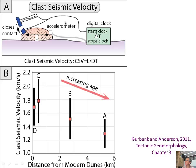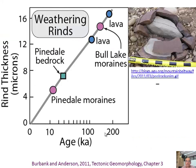You use a timer and accelerometer — hit the rock, that triggers the timer, and you know how far the seismic wave travels through the rock. If the boulder is one meter across and the seismic wave speed is a kilometer per second, it takes a millisecond to cross. You measure that time and the distance to get velocity. Older clasts are slower — though this requires the same material type, making it one of the simpler relative dating examples.